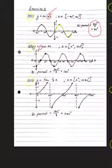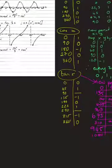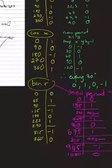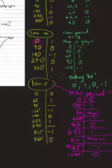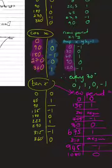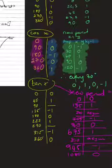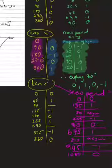For b, two things are happening: there's a negative in front of cosine, which means it's reflected on the x-axis, and there's a period shift in front of the x. Looking at the cosine graph from 0 to 360, our new period divides the x values by 3, and then the y values are multiplied by negative 1 for the reflection. So every 30 degrees — 0, 30, 60, 90 — the values go: -1, 0, 1, 0, -1, 0, alternating.